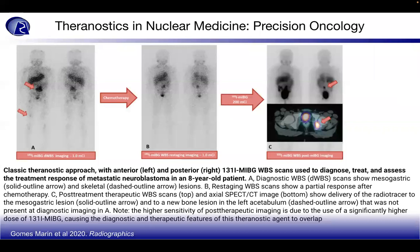The classical theragnostic approach uses anterior and posterior whole body scans (WBS) to diagnose, treat, and assess treatment response. In metastatic neuroblastoma in an eight-year-old patient: in A, the diagnostic WBS showed mesogastric and skeletal lesions indicated by red arrows; in B, restaging WBS showed partial response after chemotherapy; and in C, the post-treatment WBS and SPECT/CT image showed delivery of radiotracer to the mesogastric lesion and a new bone lesion in the left acetabulum not present at initial diagnostic imaging.